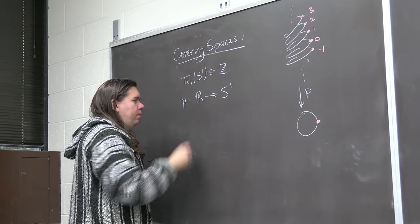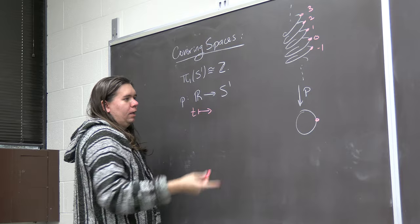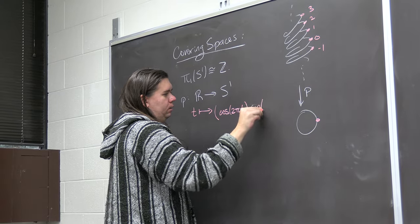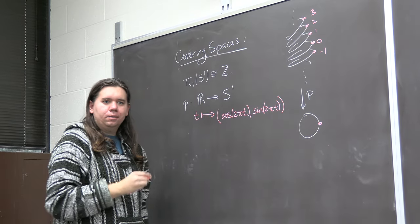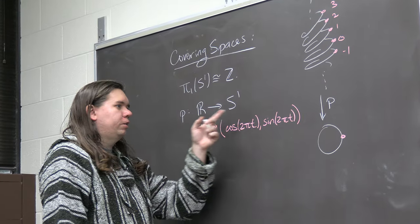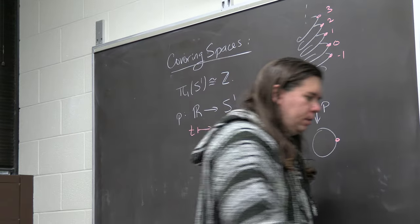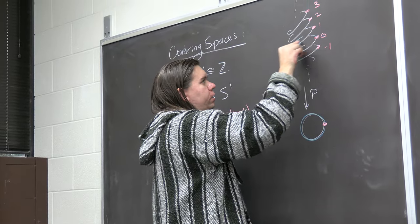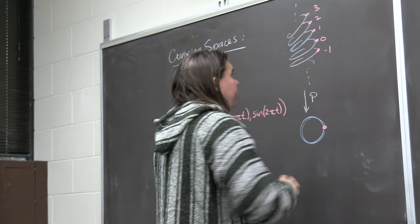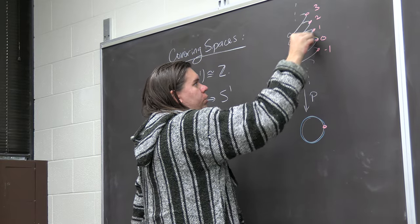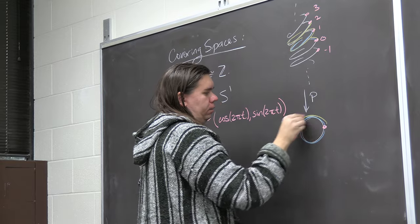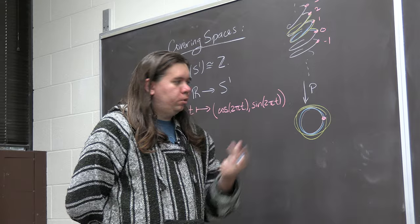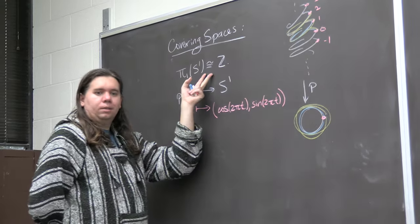We can make this precise. We could define the map that sends T to (cos(2πT), sin(2πT)) if we think of S¹ as living in two-dimensional space. Looping around once corresponds to moving from one integer to the next, and jumping two integers corresponds to looping around twice. This is how we saw that homotopy classes of loops are equivalent to integers, and how we showed the isomorphism.